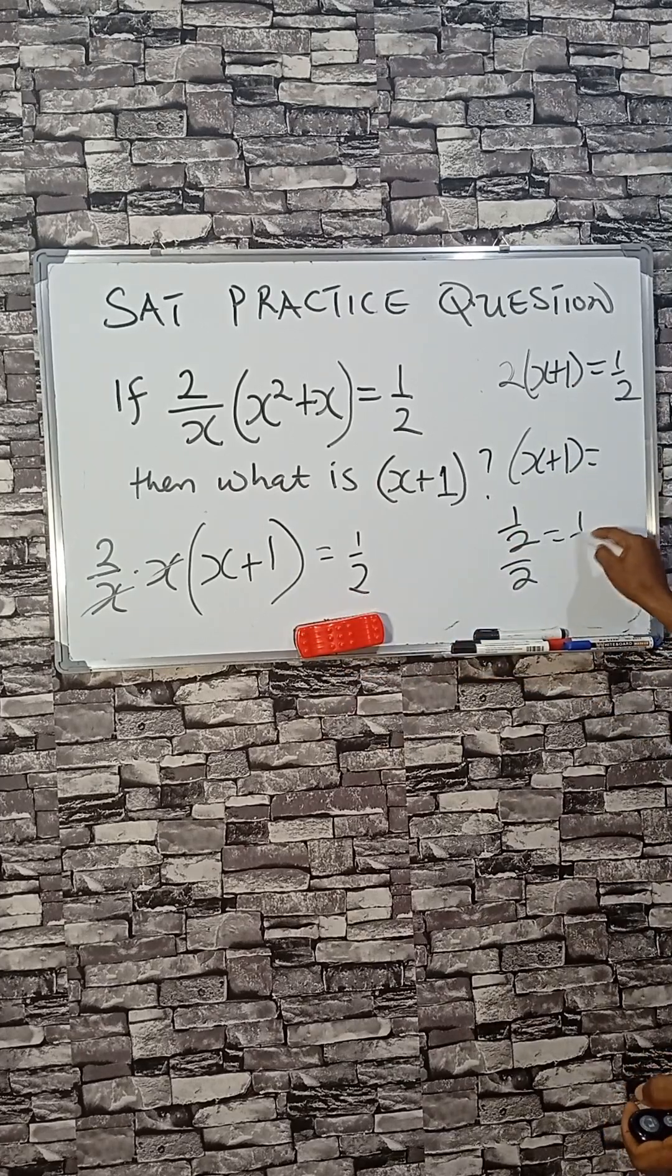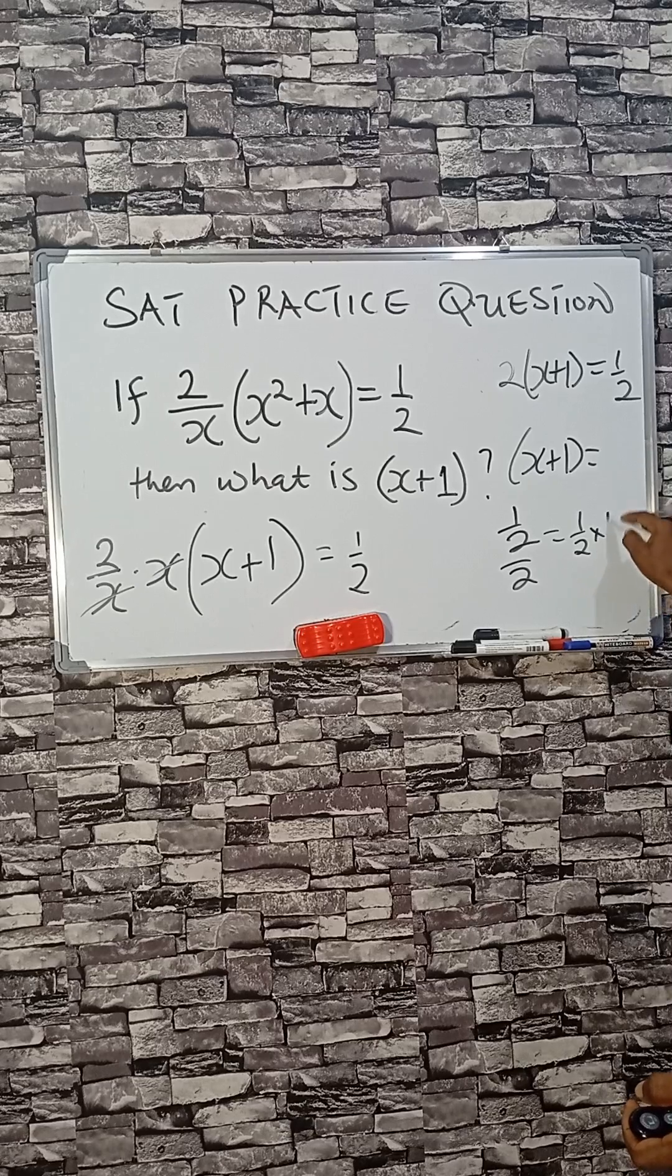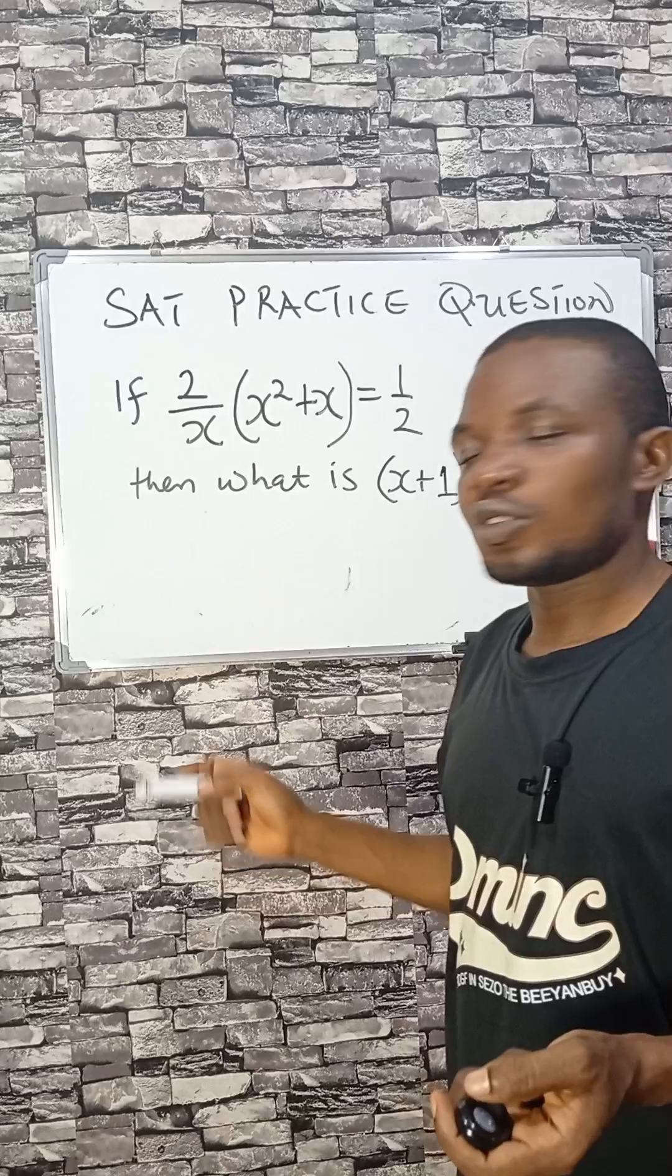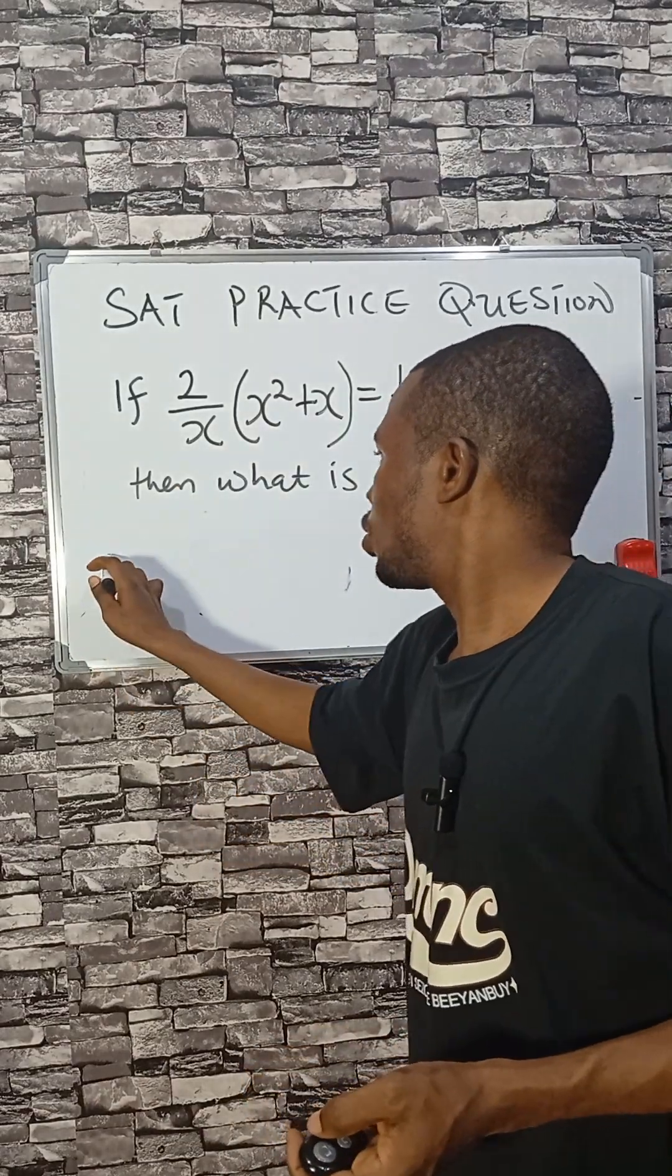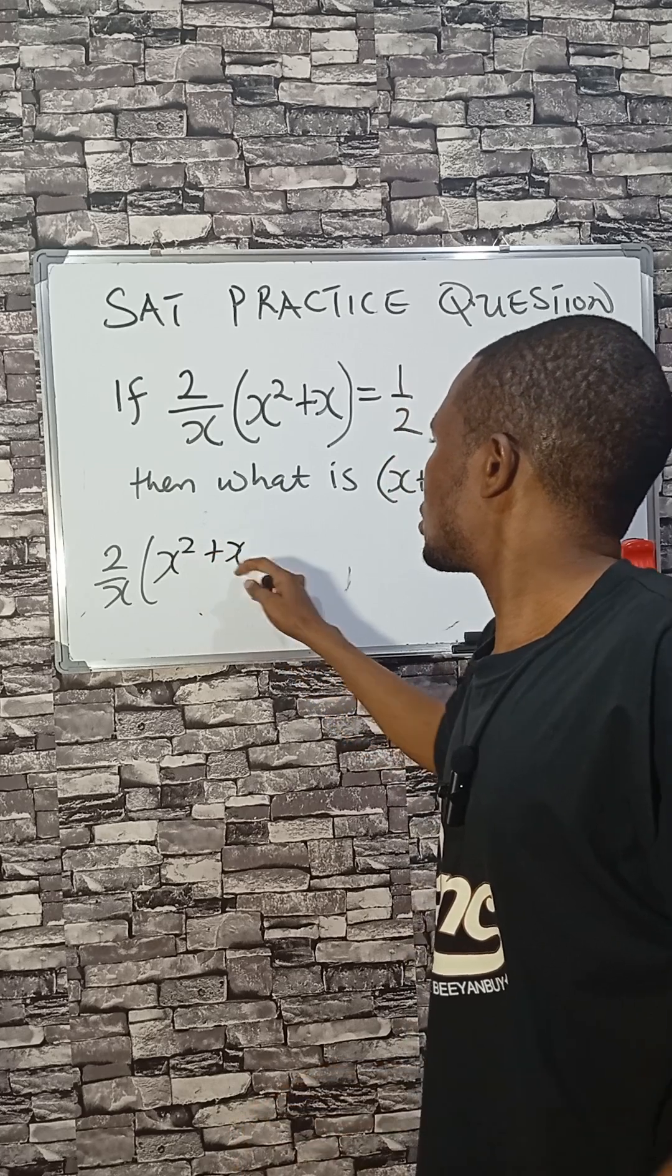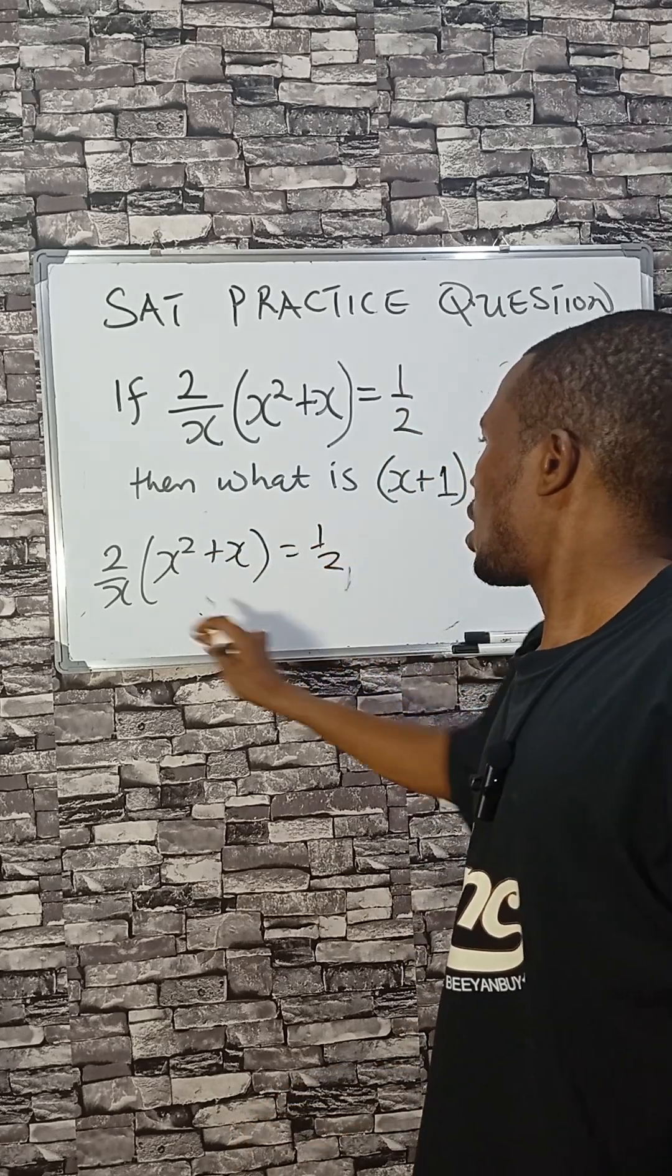Which is one over two times one over two, that is one over four. We can do it this way. Let's look at method 2. 2 divided by x into x squared plus x equals to a half.